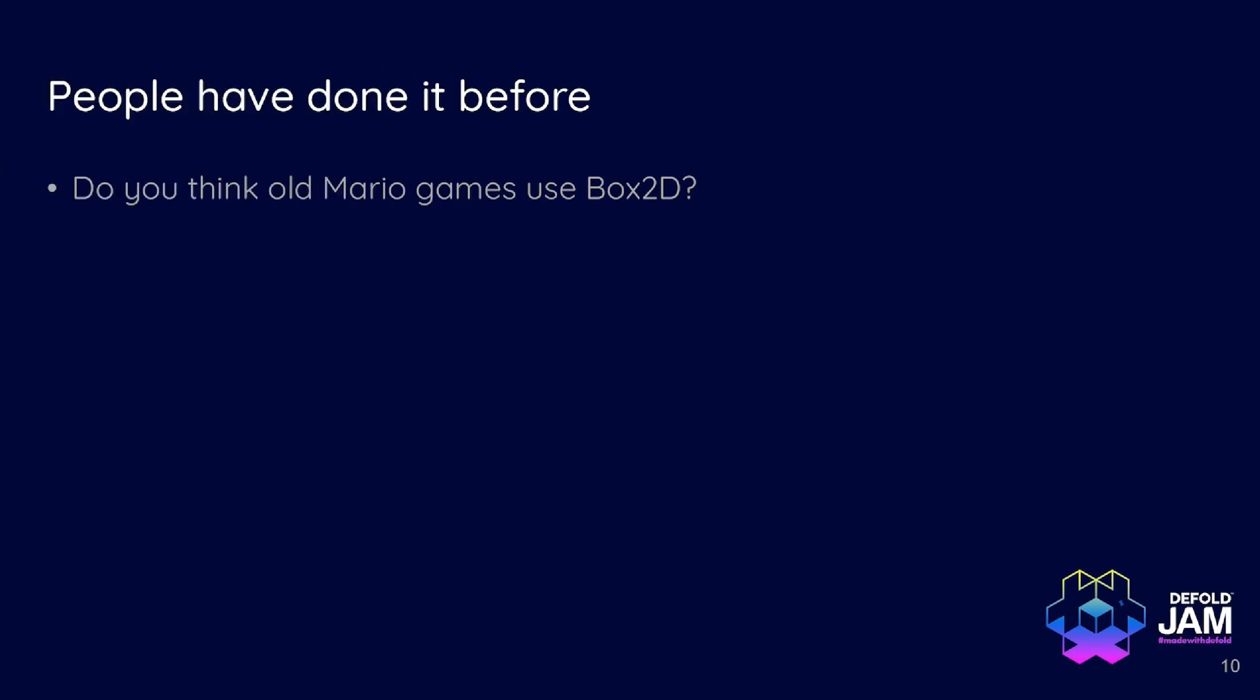Yeah, it's actually been done before. People have done games and platforms without Box2D physics for a long time. So Mario games don't use Box2D. All platformer games on NES don't use Box2D. So they have very simple calculations for their physics interactions. And it's not something complicated. You have a list of all objects. And if the number of objects is not crazy high, like in hundreds or thousands, you can check each object in the list with all other objects in the list to find collisions.